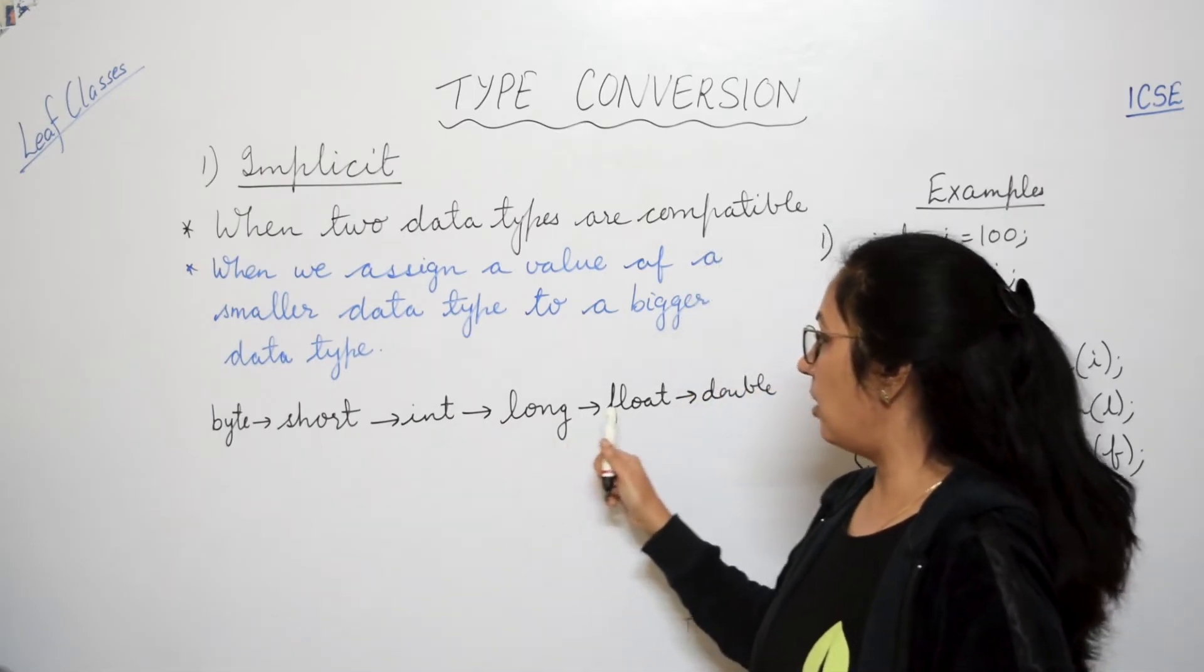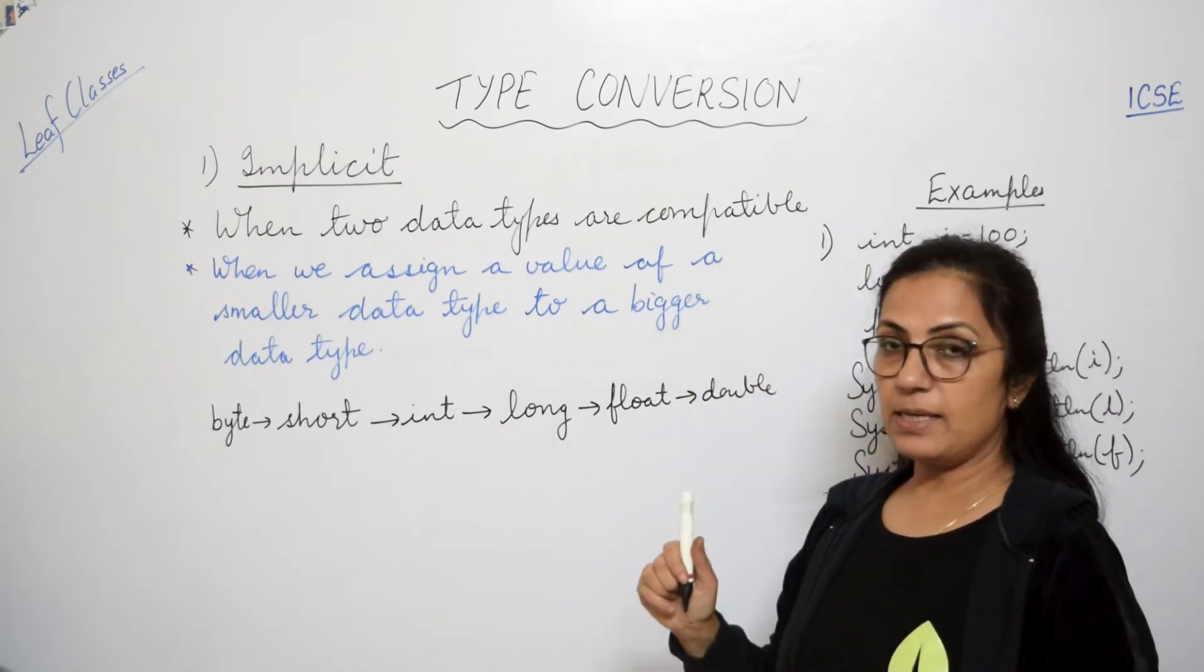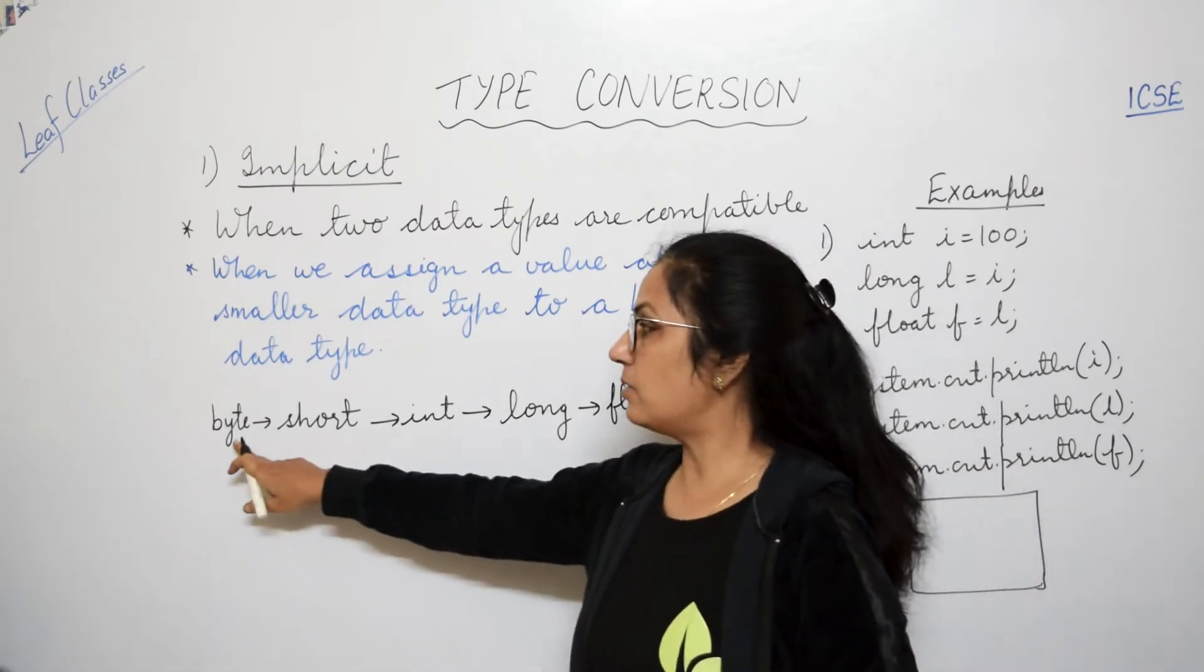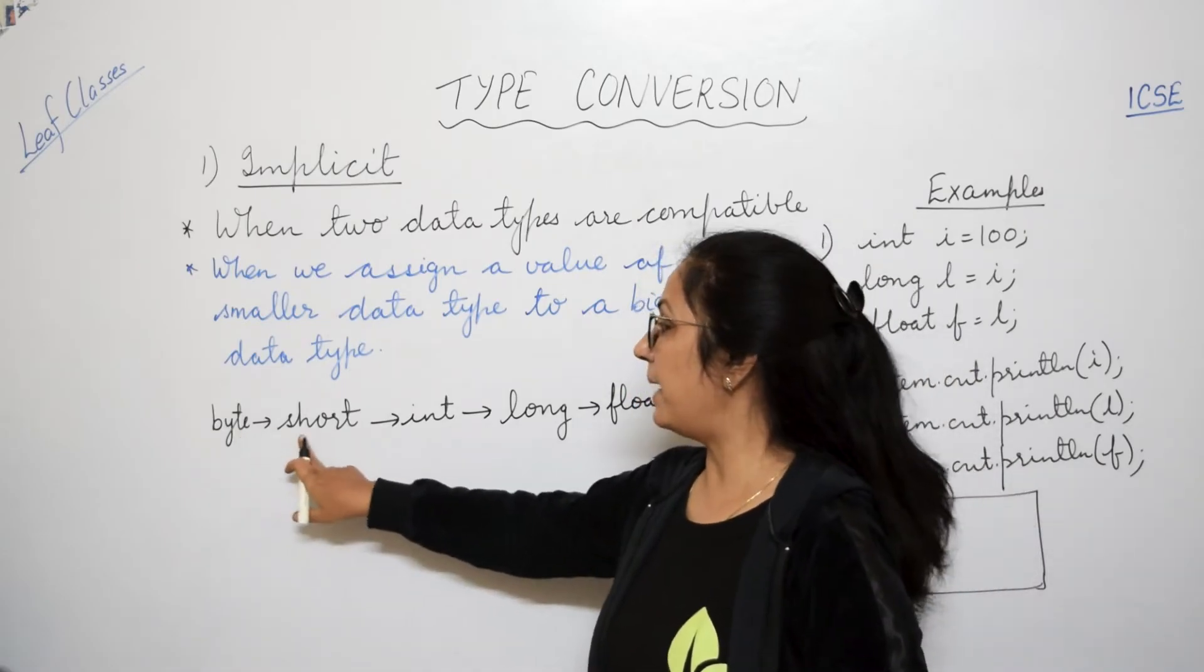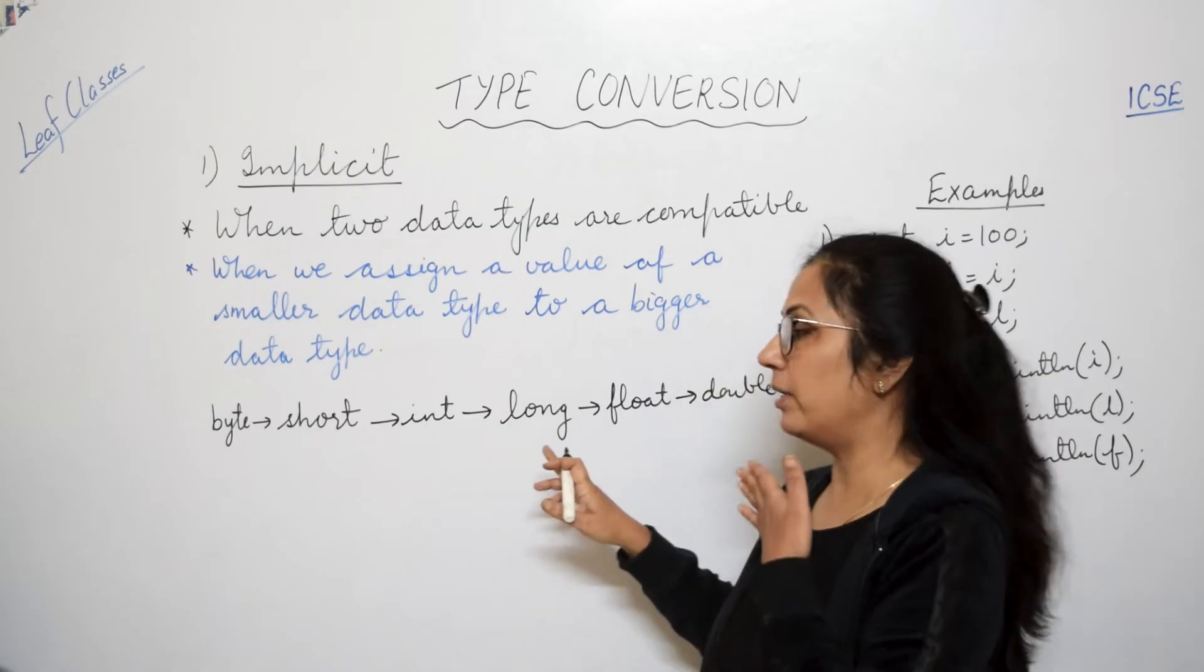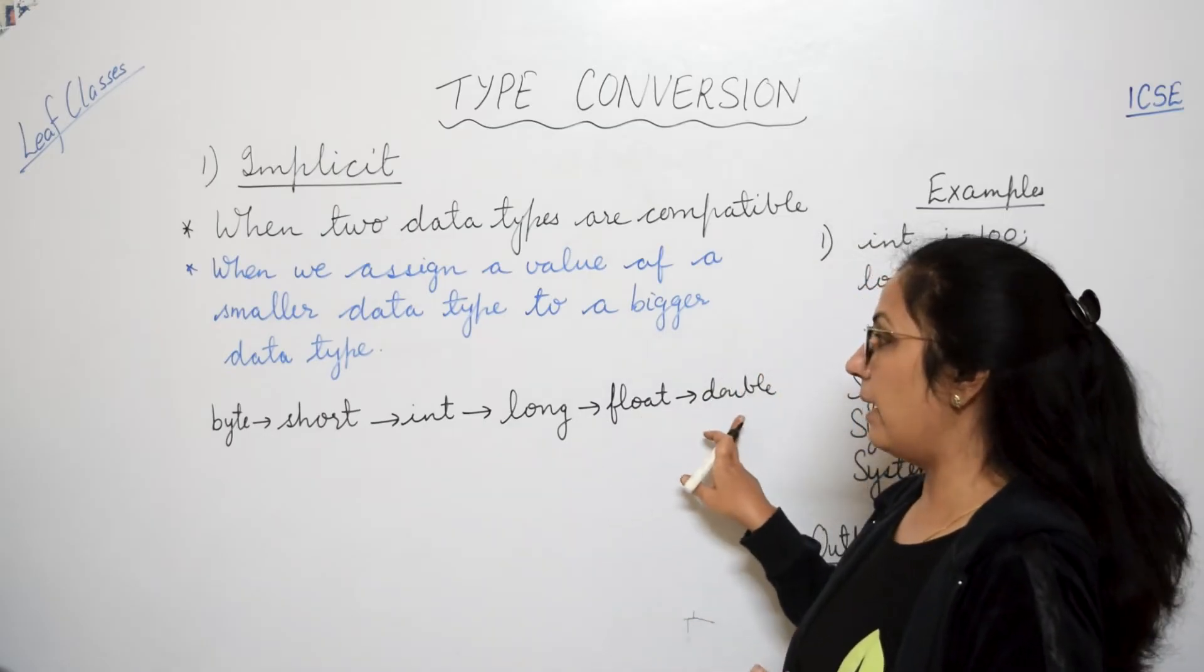Byte, short, int, long, float, double. Isko kaise yaad rakhoge? For integers, we have these four data types: byte, short, int, long. And they are in the same order, then float and double.